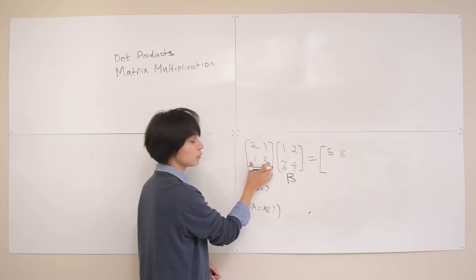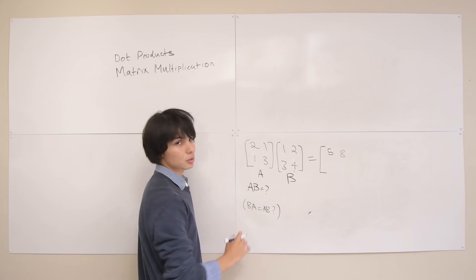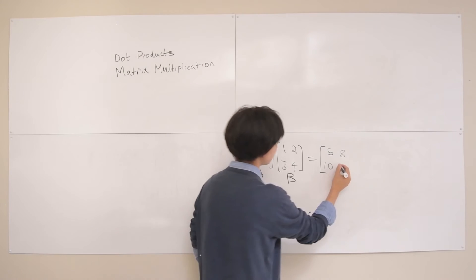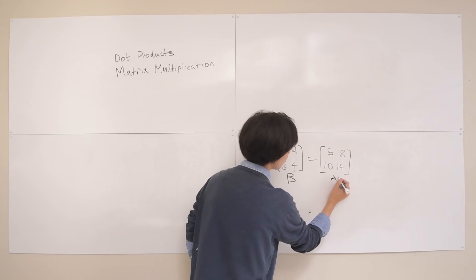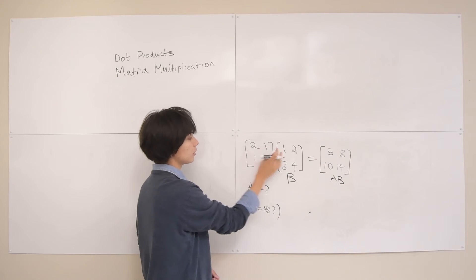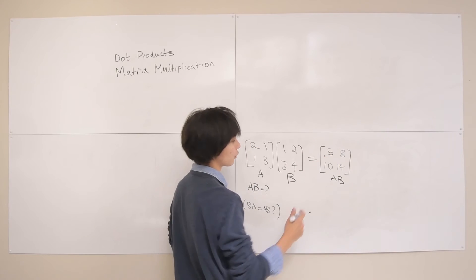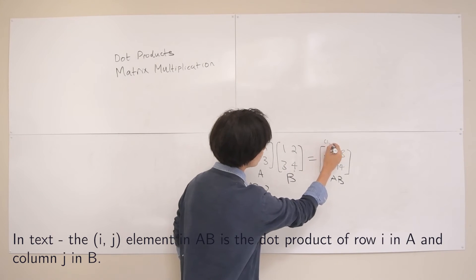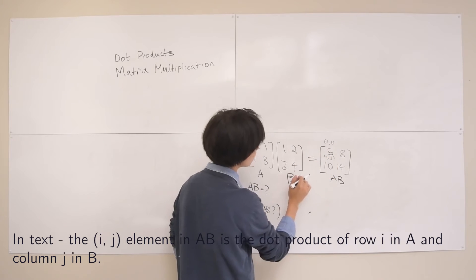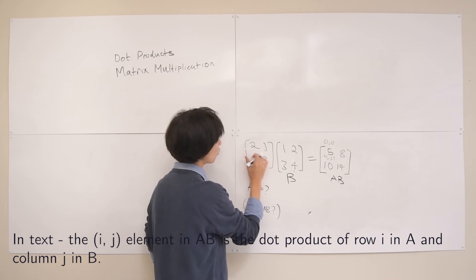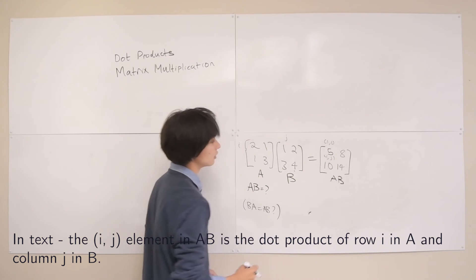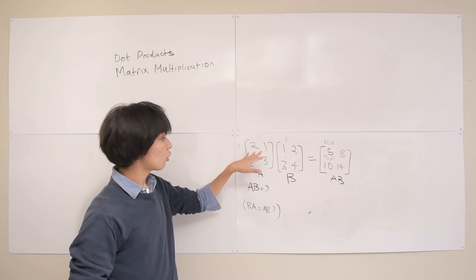Bottom-left: row [1,3] dot column [1,3] = 1×1 + 3×3 = 1 + 9 = 10. Bottom-right: row [1,3] dot column [2,4] = 1×2 + 3×4 = 2 + 12 = 14. So AB = [[5,8],[10,14]]. The general rule: for the i-th and j-th element of the result, we take the dot product of the i-th row of A and the j-th column of B.